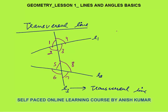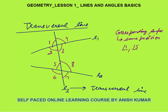The first type is corresponding angles. Corresponding angles means they are in the same position with respect to the transversal. Angle 1 and angle 5 are corresponding angles. Similarly, angle 2 and 6, angle 4 and 8, and angle 3 and 7 are also corresponding angle pairs — same position with respect to the transversal line.